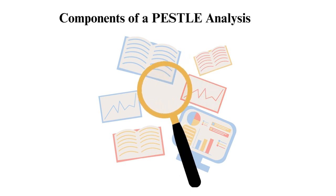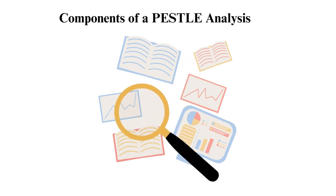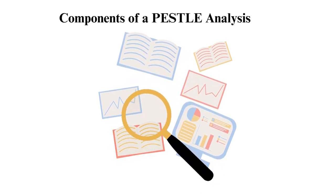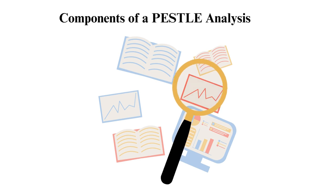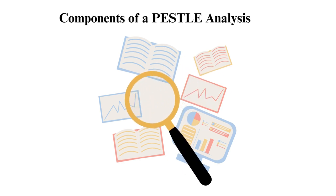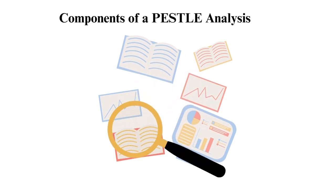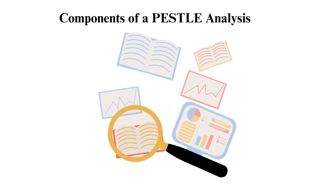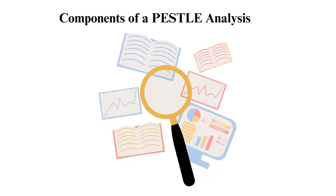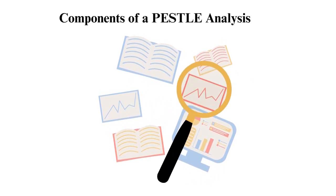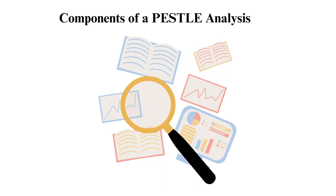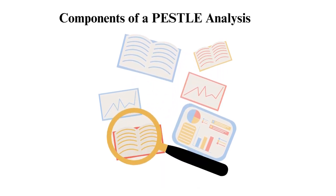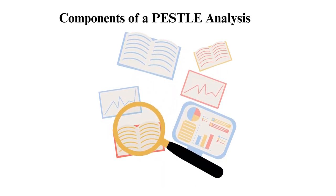Component 5: Legal factors. These factors tend to overlap with political factors. However, legal refers to the laws and regulations your company should follow. These laws include copyright, exports, and more.